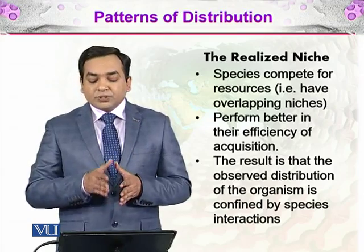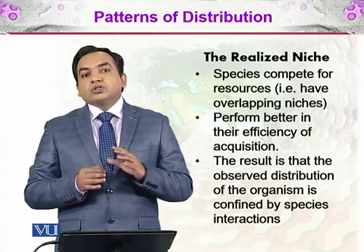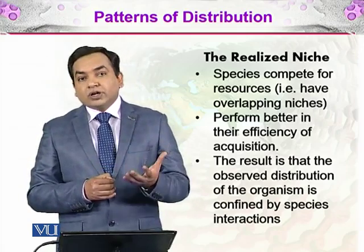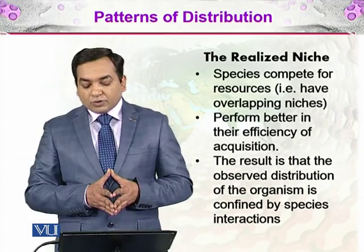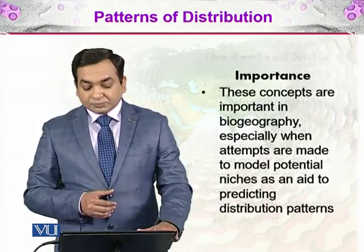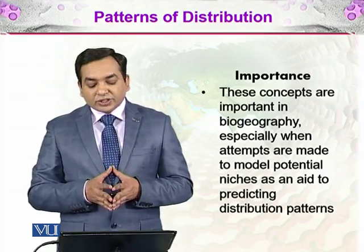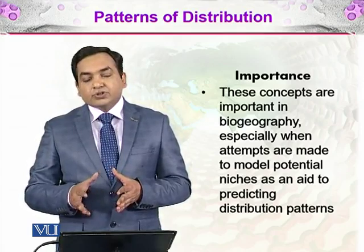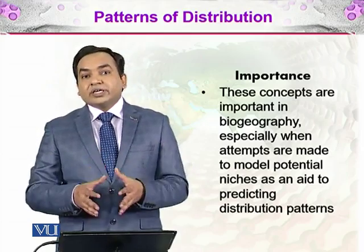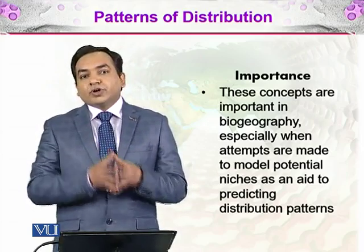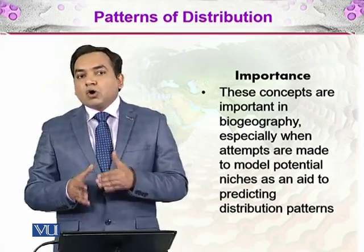The realized niche occurs when species compete for resources and have overlapping niches. Species that more effectively acquire resources will be more successful. The result is that the observed distribution of organisms is confined by species interactions. These concepts are important in biogeography, especially when modeling potential niches to predict distribution patterns — niches can help us predict whether a certain organism can fit into a particular environment.